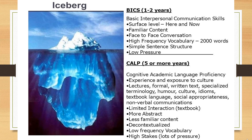Examples of BICs include a student asking the teacher, 'Can I get a drink of water?' or 'Can I go to the bathroom?' or having conversations with friends on the playground. BICs takes about one to two years to acquire, and acquiring BICs allows the learner to be effective in a social setting.